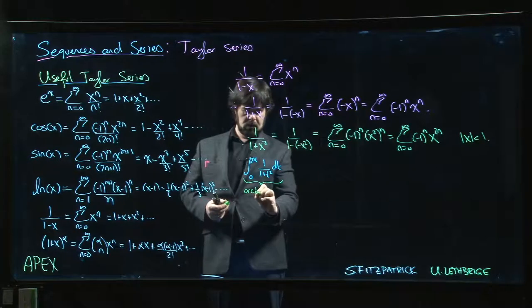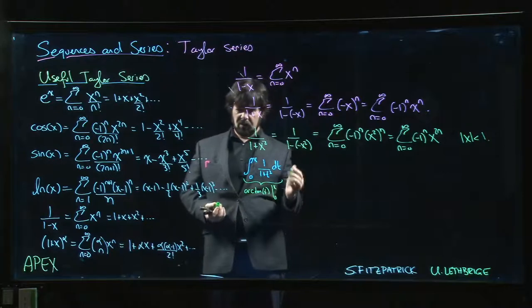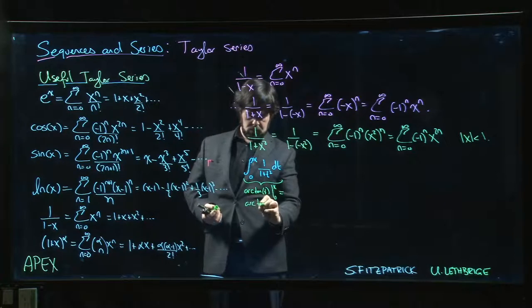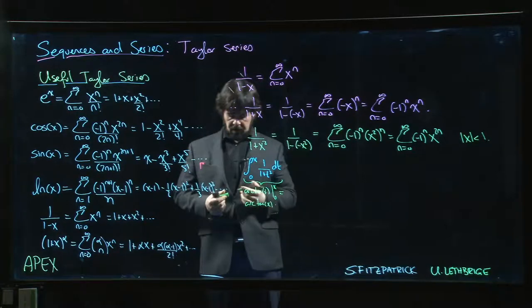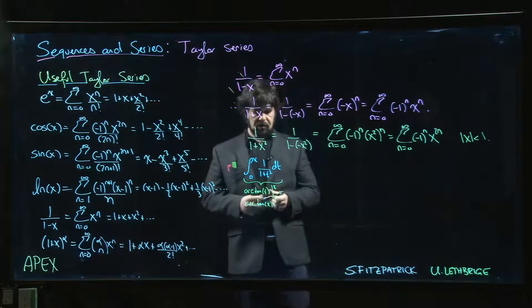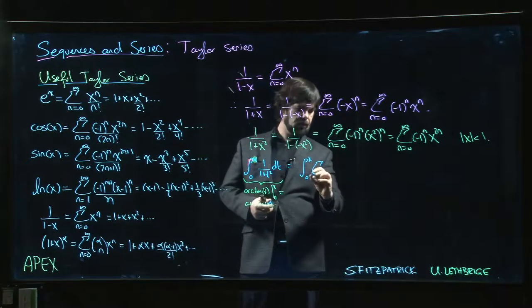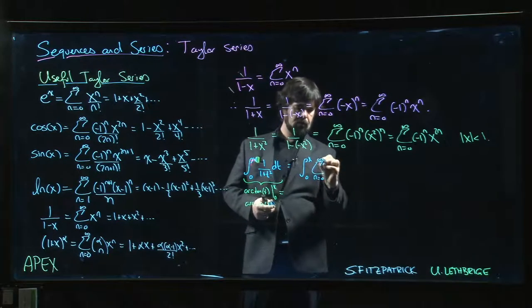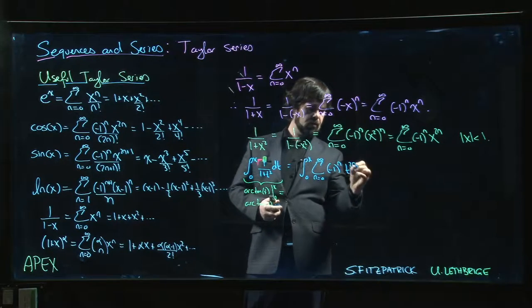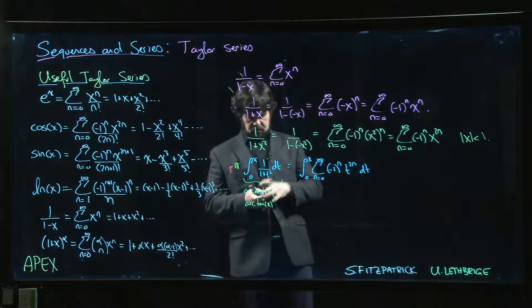Well, on the one hand, I know what this is. This is going to be arctangent of t evaluated from 0 to x. Arctangent of 0 is 0, so this is just arctangent of x. Very good.